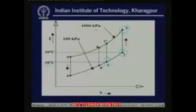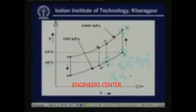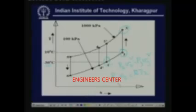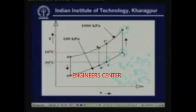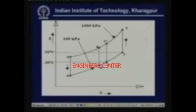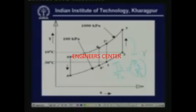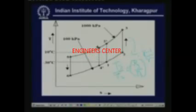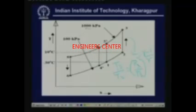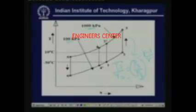First, let us look at point 3. Since process 2 to 3 is isentropic compression, we can write T3/T2 = (P3/P2)^((γ−1)/γ). P3 is 1000 kPa, P2 is 100 kPa, and gamma is 1.4, so T3 can be found. Points 4 and 5 will be found using the effectiveness of the heat exchanger and energy balance across the regenerative heat exchanger. For process 5 to 6, isentropic expansion gives T5/T6 = (P5/P6)^((γ−1)/γ), where P5 is 1000 kPa and P6 is 100 kPa. Once T5 is known, T6 can be found.